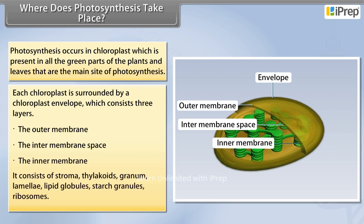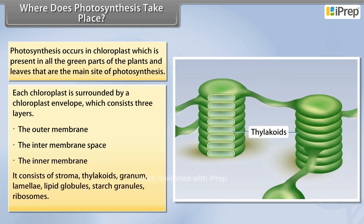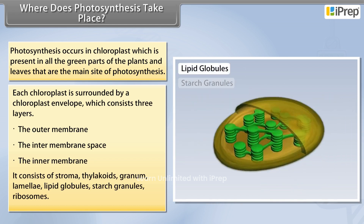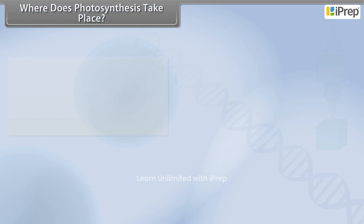It consists of stroma, thylakoids, granum, lamellae, lipid globules, starch granules, and ribosomes.